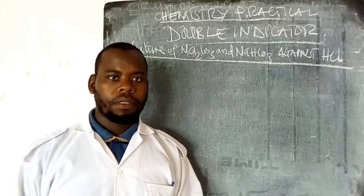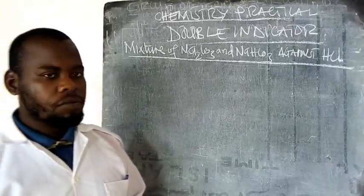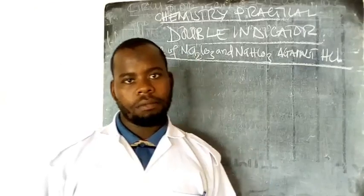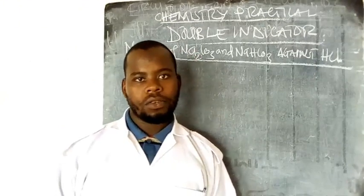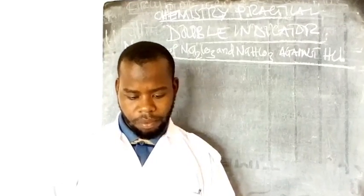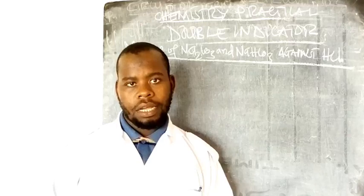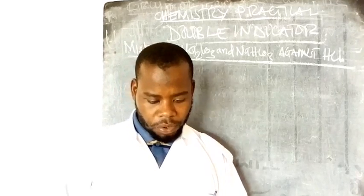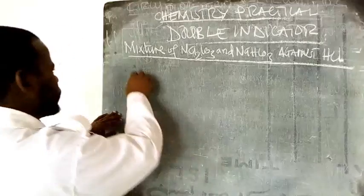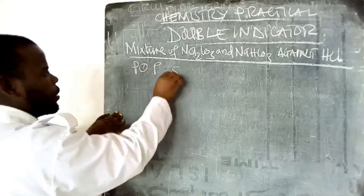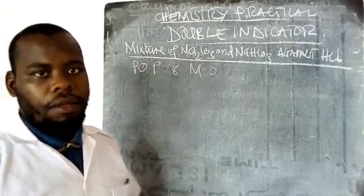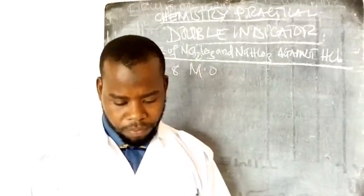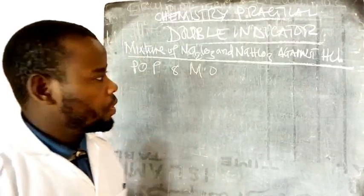There are more experiments performed within this channel. For today we are going to learn about the double indicator involving the mixture of sodium carbonate and sodium hydrogen carbonate (sodium bicarbonate). We are using the indicators mostly used at advanced level. We will use phenolphthalein indicator, which is POP, and methyl orange.